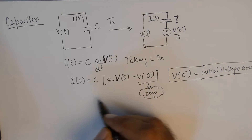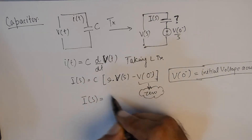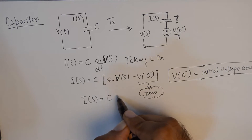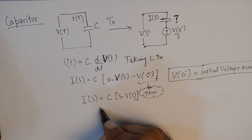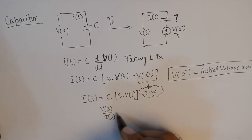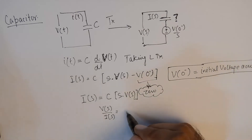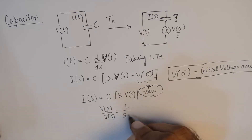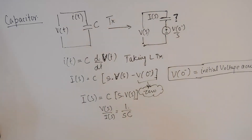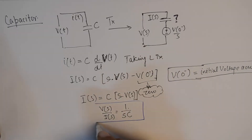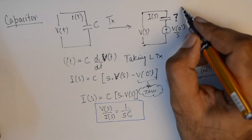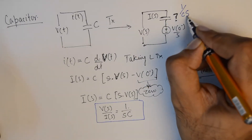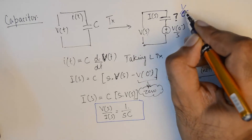Everything becomes easy then — I(s) becomes equal to C·s·V(s). We are looking for V(s)/I(s), which is the impedance for the capacitor in s-domain, and that becomes equivalent to 1/(s·C). This again becomes a very important transformation — the value of C becomes equivalent to 1/(s·C), so the Laplace operator s features in the denominator along with C when it is transformed.